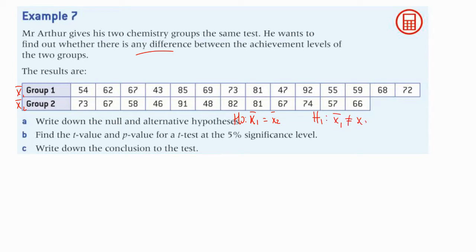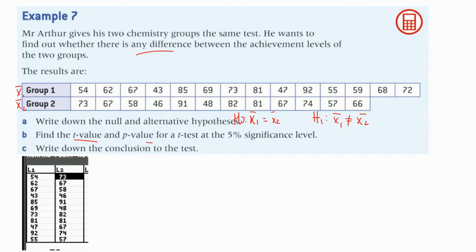Find the t-value and the p-value, then make a decision. The good thing here is we're going to use the p-value to make our decisions. IB is going to require you to find the t-value and use the p-value to make the comparison. Just like with correlation, put the values into two lists. This would be a great place to pause and enter your values — the second list is shorter than the first.